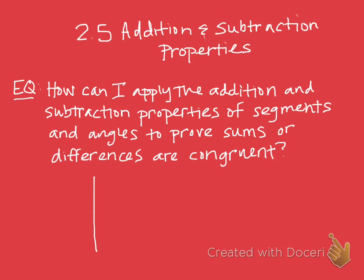Here are your 2.5 notes. They need to go on your next right page. You may title your notes 2.5, Addition and Subtraction Properties. The essential question is: how can I apply the addition and subtraction properties of segments and angles to prove sums or differences are congruent?